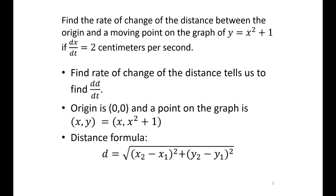In our first example, we find the rate of change of the distance between the origin and a moving point on the graph of y equals x squared plus 1, if dx/dt equals 2 centimeters per second. We'd draw the graph y equals x squared plus 1, and mark the distance from the origin to a moving point on it. Finding the rate of change of the distance means we're looking for dd/dt. The origin is the point (0,0) and a random point on the graph is (x, x²+1).